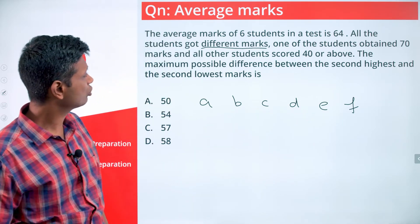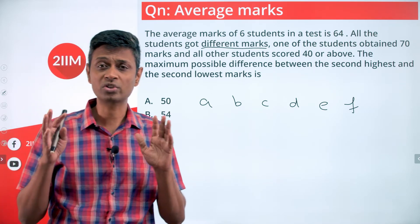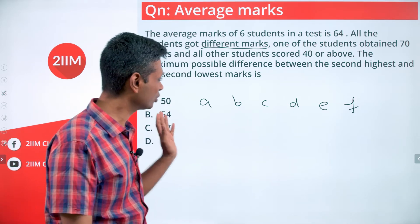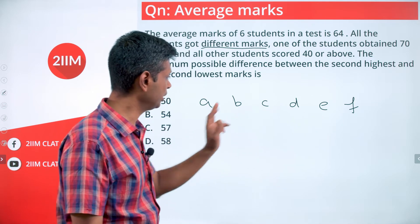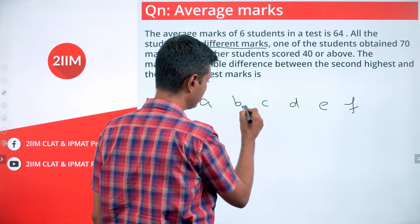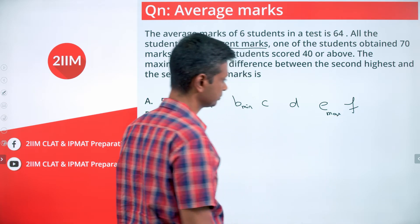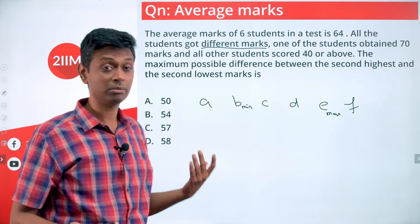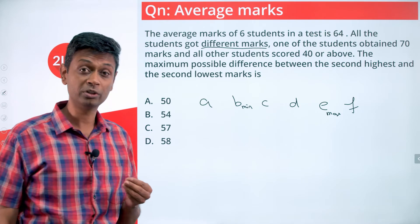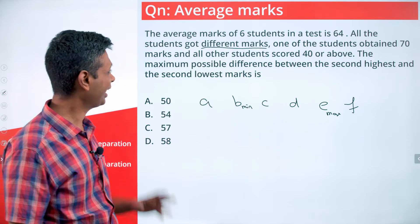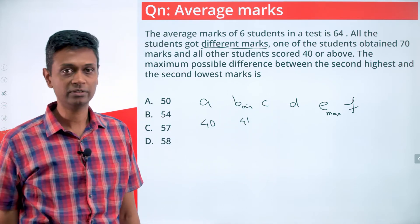We want the maximum possible difference between e and b. Every student scored 40 or more, the average is 64, someone in the middle scored 70. We want maximum e minus b, so b should be minimum possible and e should be maximum possible. Then only the difference will be maximum. So b should be minimum, a should be minimum because b is more than a. So I'm going to put 40 here and 41 here.